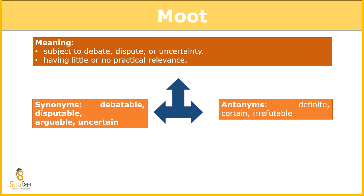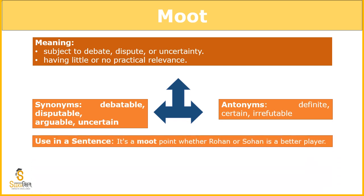Antonyms of moot: definite, certain, irrefutable — meaning points that we cannot refuse, points we must take into account. Use in sentence: it's a moot point whether Rohan or Sohan is a better person. Comparing people should not be done at all, but if you are doing it, it's an irrelevant point — there is no comparison between the two.